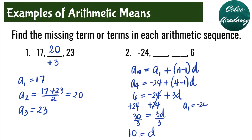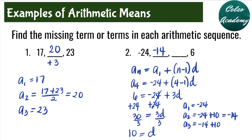Our first term is negative 24. The second term is obtained by adding 10: negative 24 plus 10 equals negative 14. The third term is negative 14 plus 10, which is negative 4. To check, negative 4 plus 10 gives us 6 for a sub 4. So the two arithmetic means are negative 14 and negative 4.